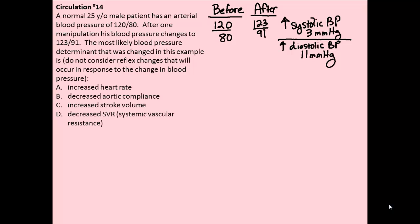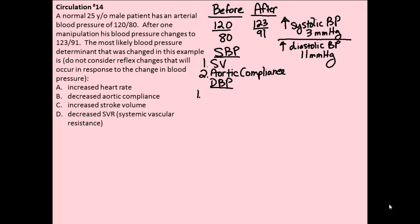In class, we went through the main factors affecting systolic or diastolic blood pressure. The two main factors that primarily affect systolic pressure are stroke volume and aortic compliance, whereas the two main factors affecting diastolic blood pressure are heart rate and total peripheral resistance.